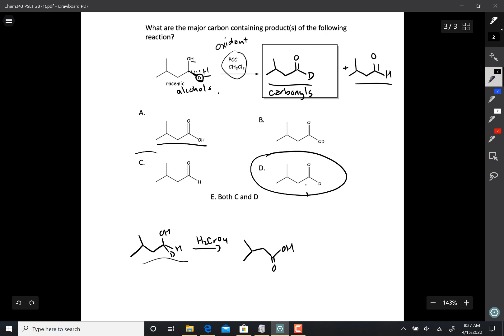So both of these are products. The correct answer for this one is E, both C and D are products. Mainly because deuterium is also a hydrogen and it can be removed in this PCC reaction, giving you both.